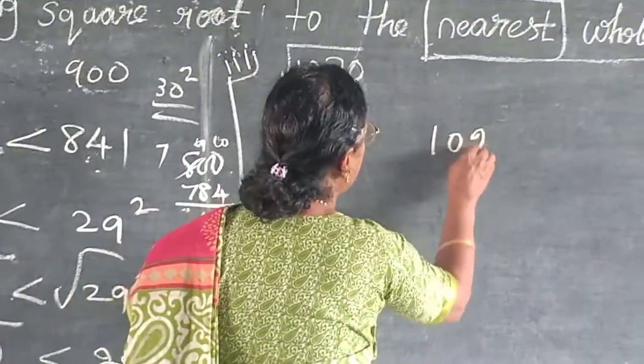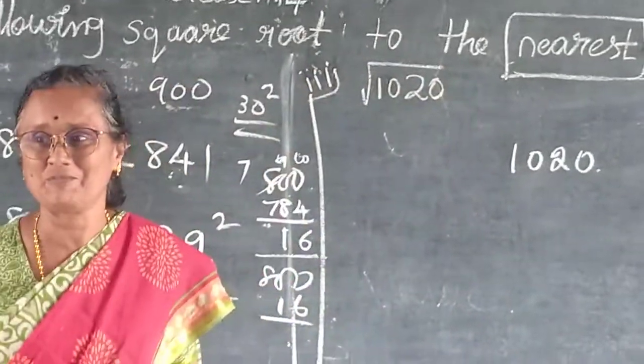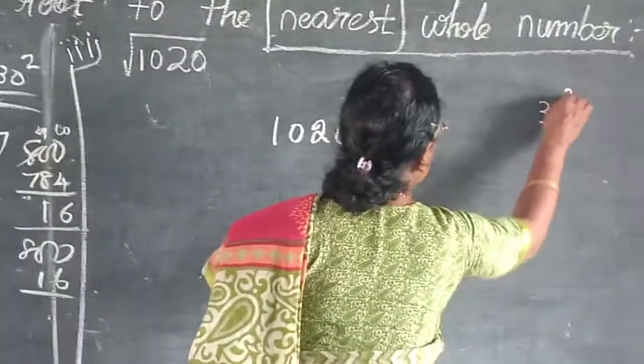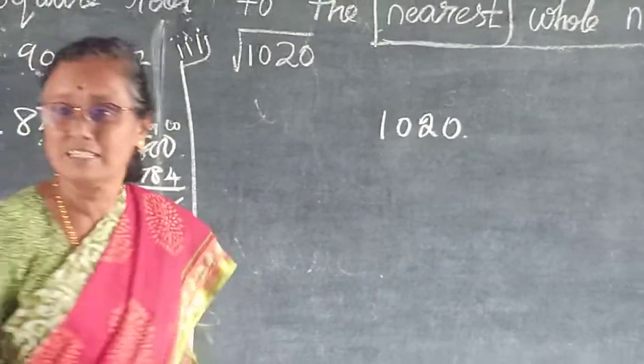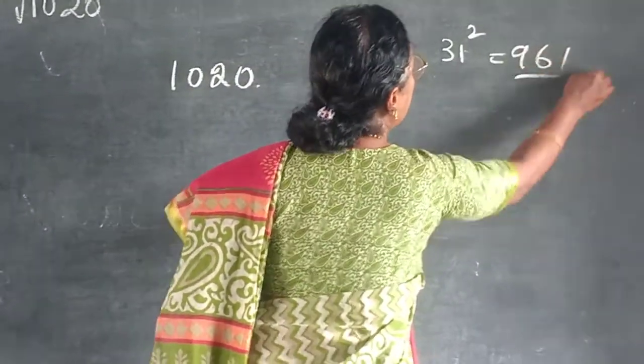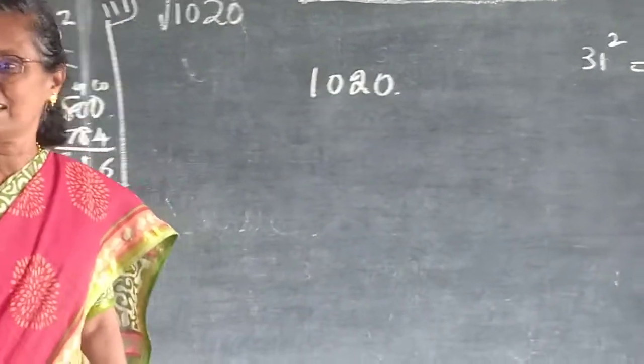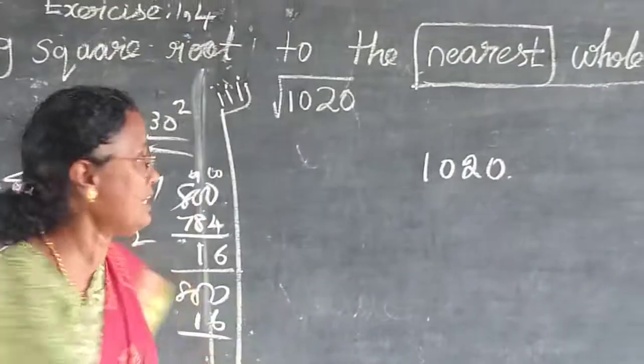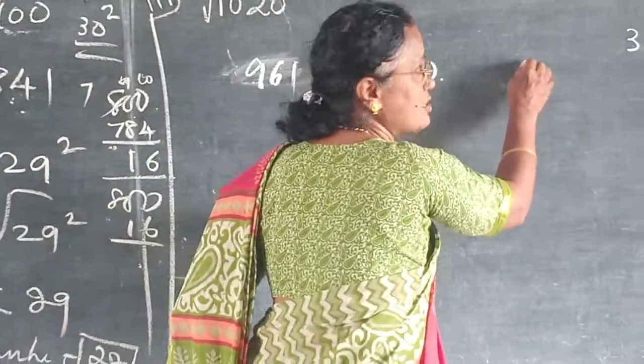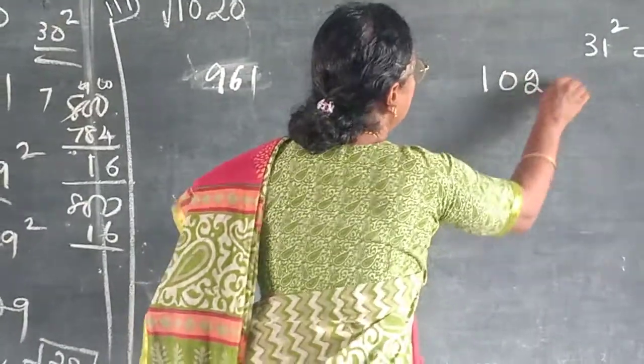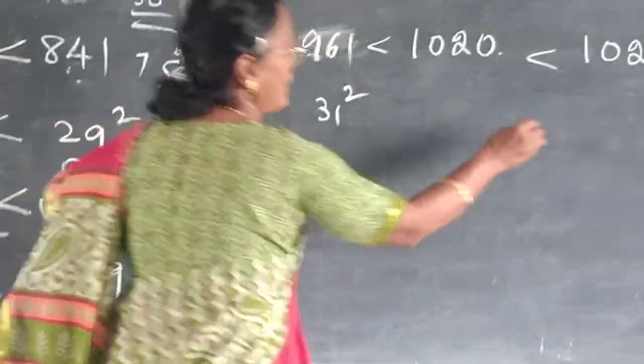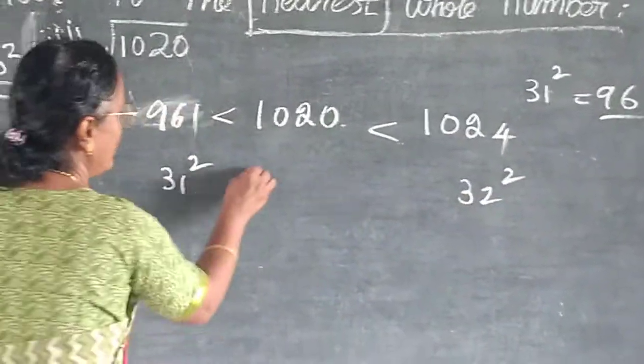Next one, √1,020. This is 4 digit number. Up to 31 square, it is 3 digit. 31 square is how much? 961. So, 31 is less. 961. Next, 32 square is how much? 1,024. So, this is nothing but 31 square. This is 32 square.